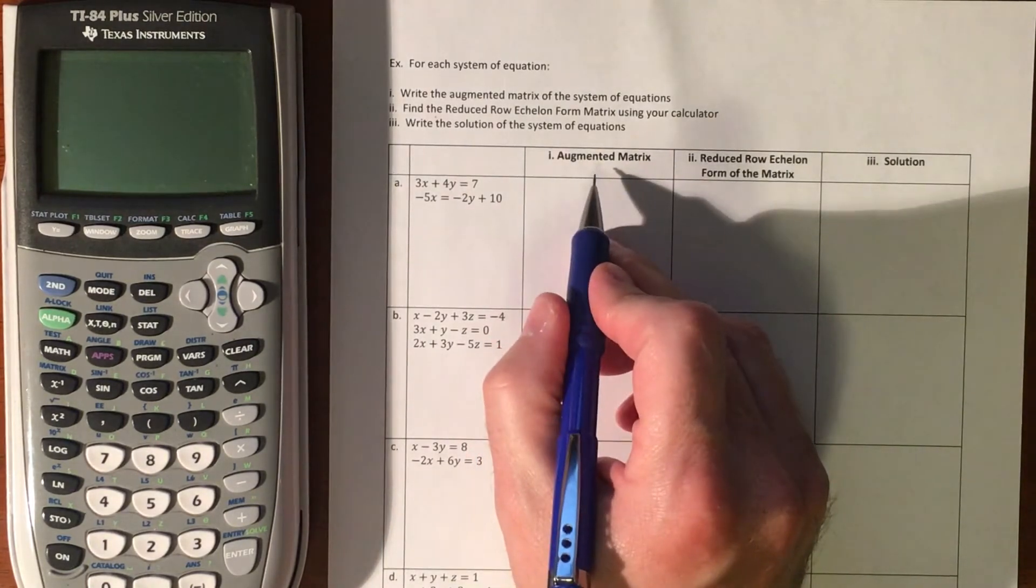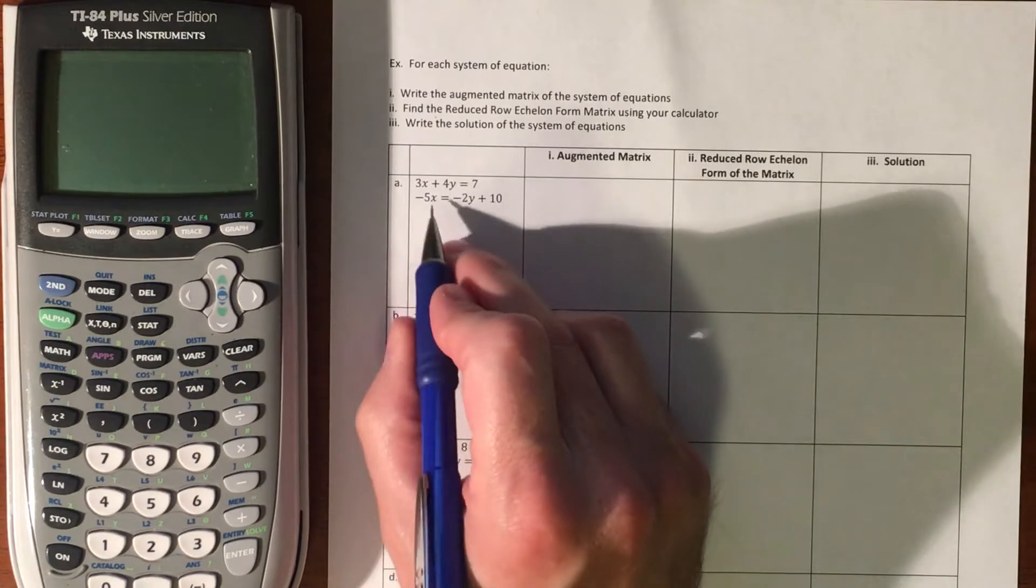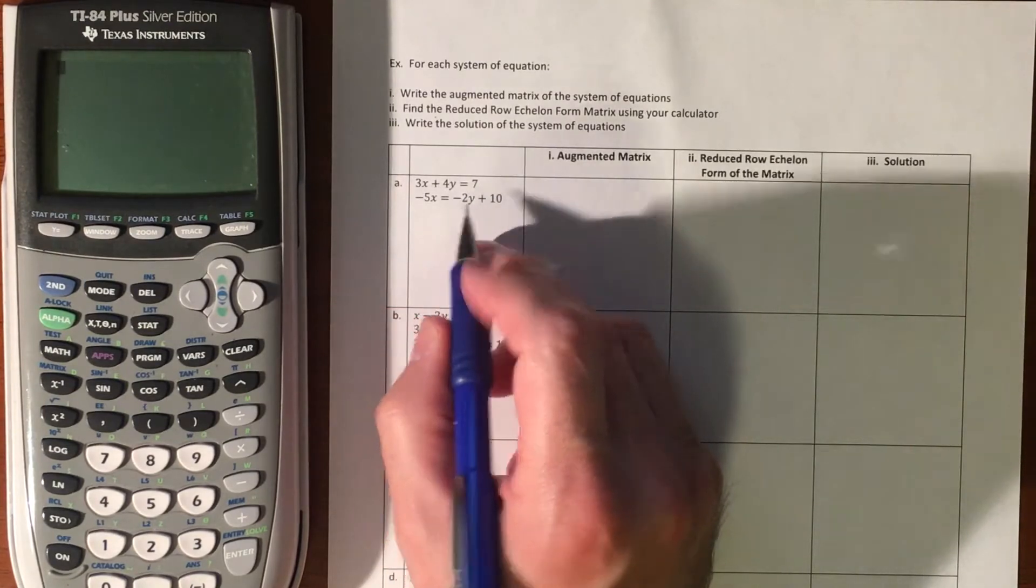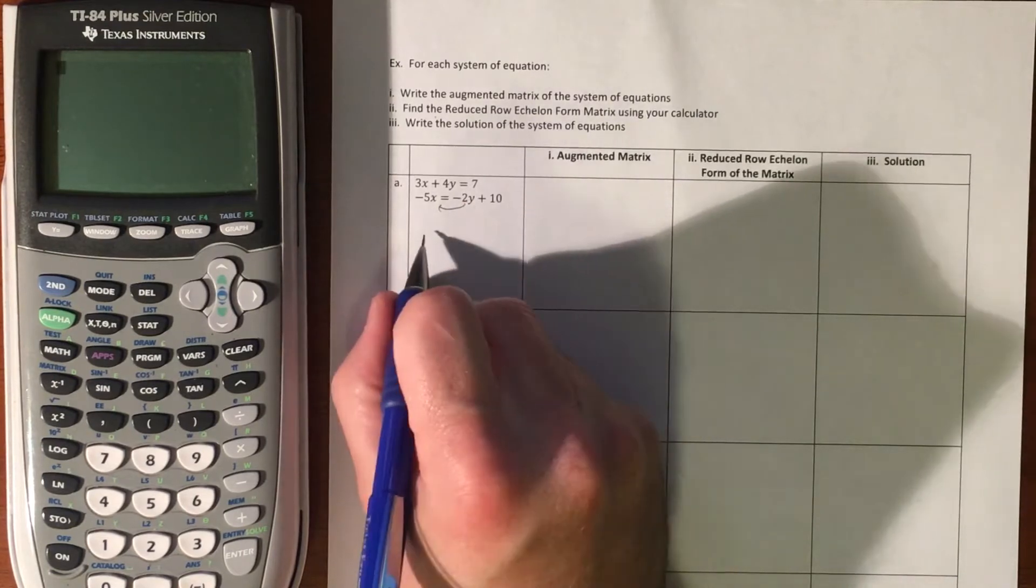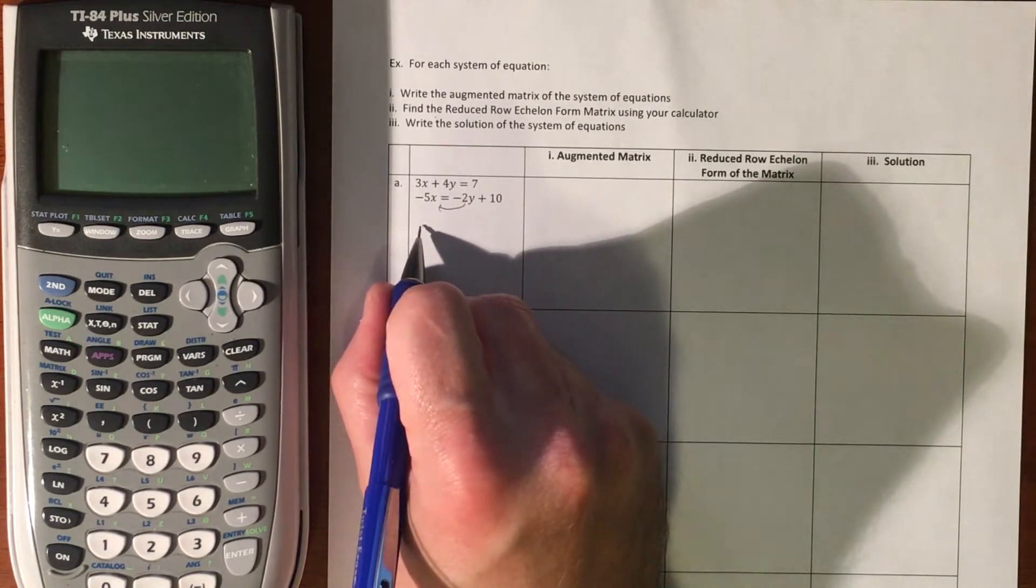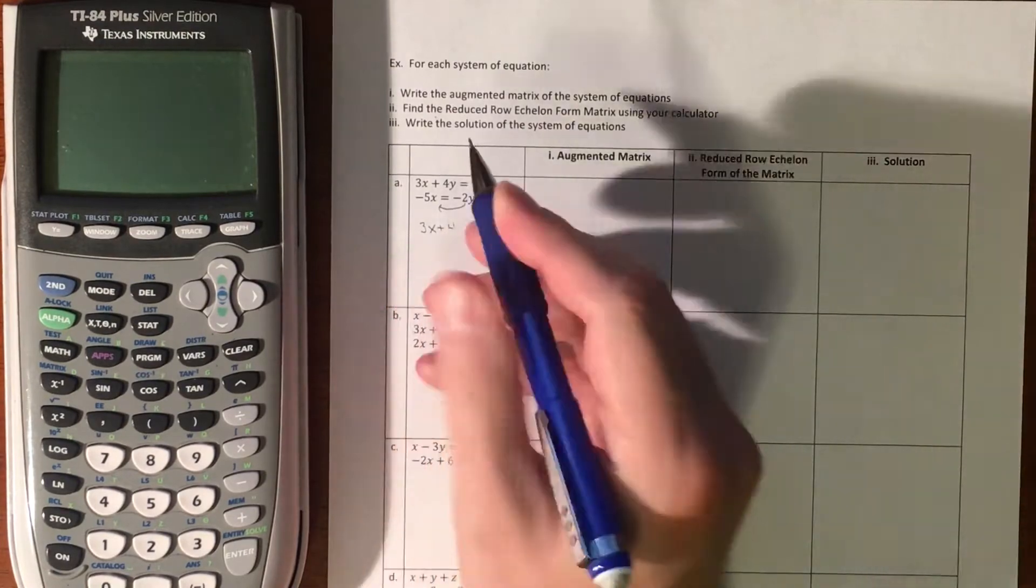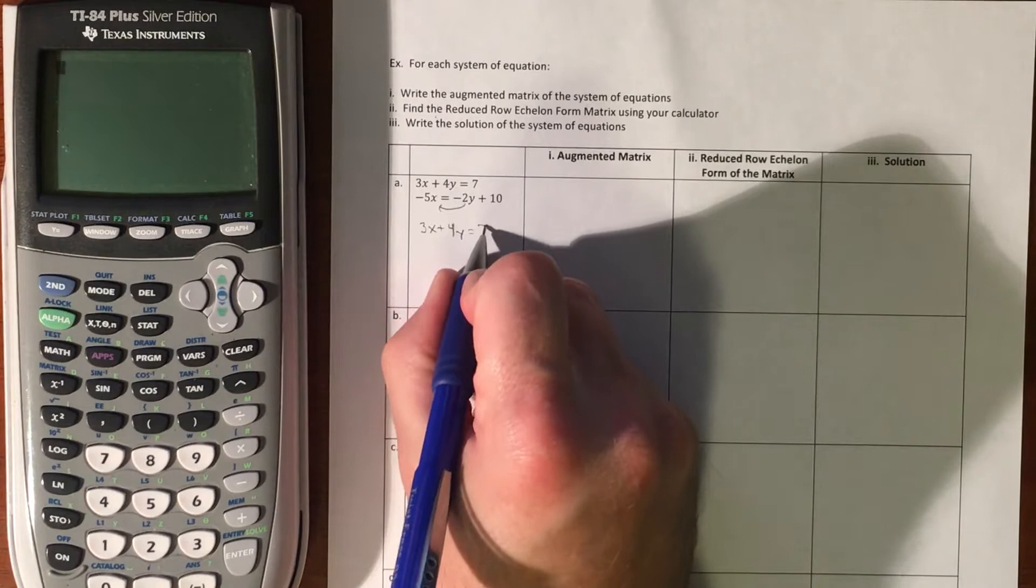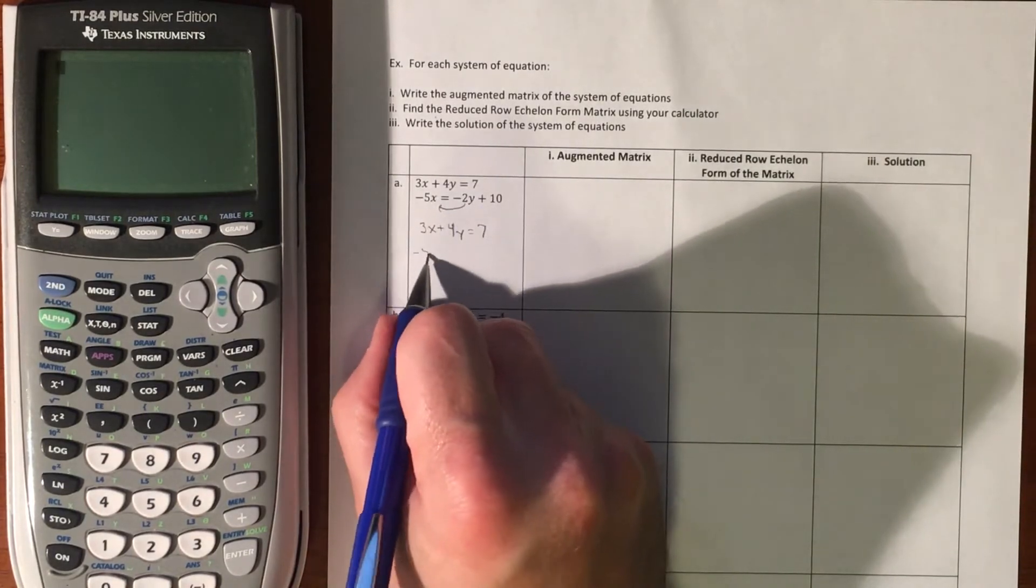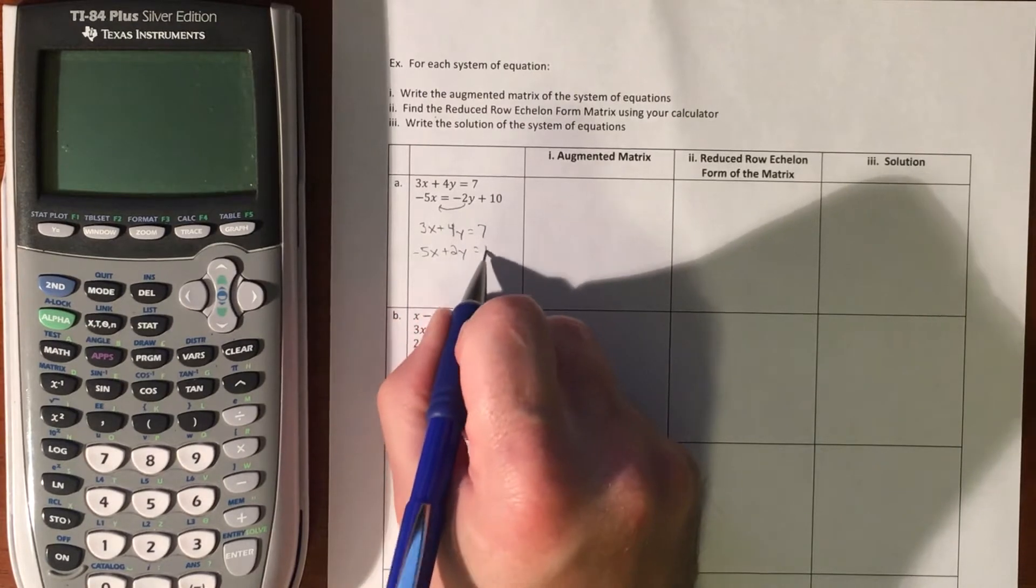First, we're going to put it into an augmented matrix. An augmented matrix requires lining up all your X's and Y's. Looking at the top equation, I didn't do anything to it. Then I have negative 5X plus 2Y equals 10.